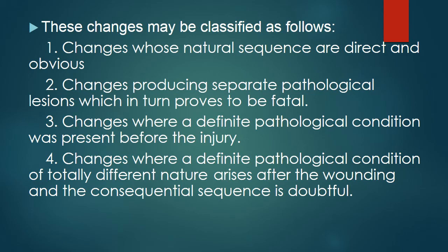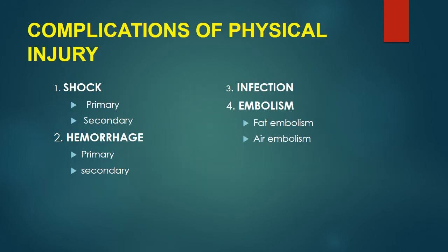Secondary shock and nature of death due to secondary causes: a person may have recovered from the immediate effects of the trauma or violence but may later die of its secondary effects. These changes may be classified as: changes whose natural sequence are direct and obvious; changes producing separate pathological lesions which in turn prove fatal; changes where a definite pathological condition was present before the injury; and changes where a definite pathological condition of totally different nature arises after the wounding and the consequential sequence is doubtful. It is more dangerous if there is already an underlying illness because wounds can aggravate it. Complications of physical injury are: shock, hemorrhage, infection, and embolism.